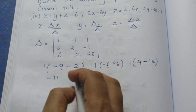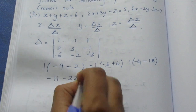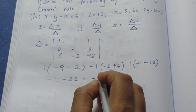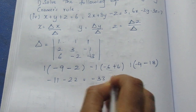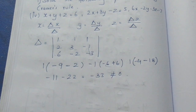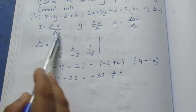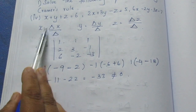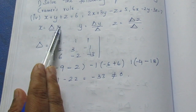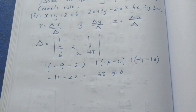Looking at the full calculation, we get minus 22, equal to minus 33, which is not equal to 0. So delta (the main determinant) is not equal to 0. We place the determinant value in the denominator. If it were 0, the denominator would be undefined.